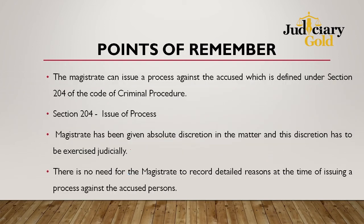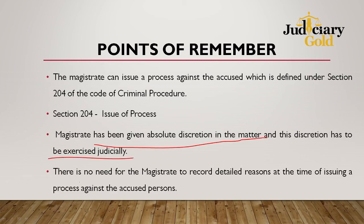To recap: the magistrate can issue a process against the accused as defined under Section 204 of the CRPC. Section 204 provides for issue of process in two ways — summons in a summons case and warrant in a warrant case. The magistrate has been given absolute discretion in this matter, which must be exercised judicially. There is no need for the magistrate to record detailed reasons at the time of issuing a process against the accused person.